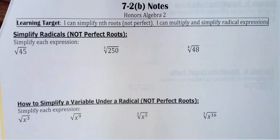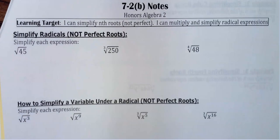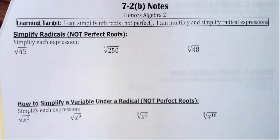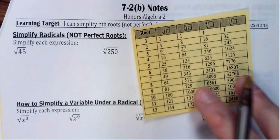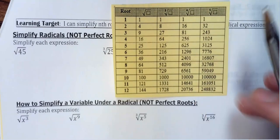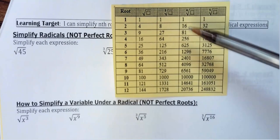Today we are going to work on simplifying radicals that are not perfect. Many people know how to do a square root using a factor tree, but I want to show a little bit different method that I think is faster. If you do like to use a factor tree you can, but I recommend trying this out. If you don't have it, grab the page of notes right before this — that little yellow piece of paper.